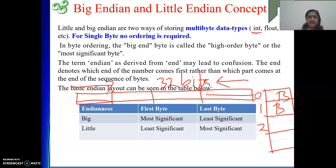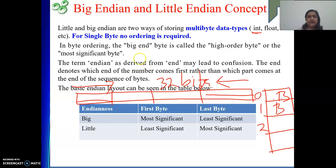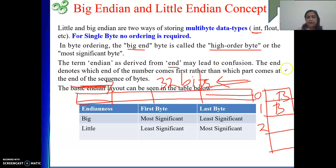The endianness concept — byte ordering — only comes into play for multi-byte data. For single byte there is only one ordering. But for multi-byte data, we can go from the left-hand side or the right-hand side. In the case of big endian, the byte is called the high-order byte — that is the MSB — and the other end is the low-order byte or LSB. The term 'endian' is derived from 'end', indicating from which side of the number bytes will be stored in memory first.